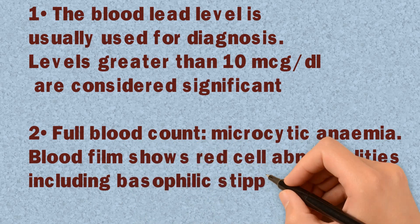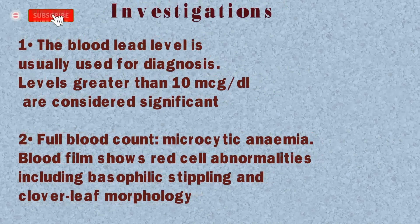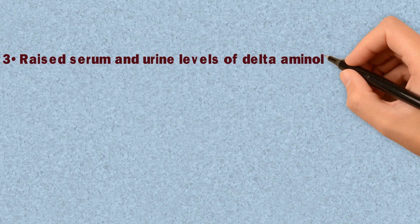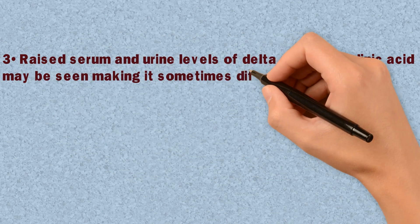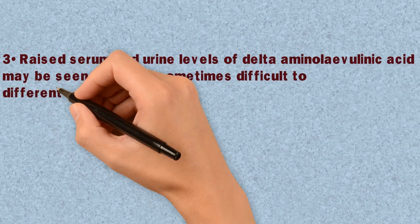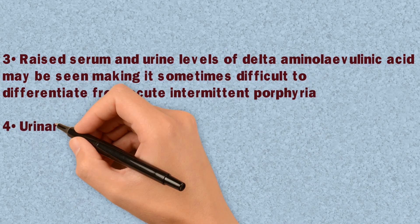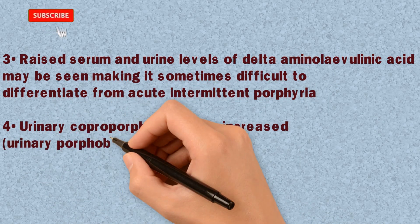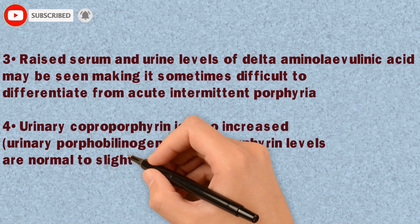Blood film findings include basophilic stippling and clover leaf morphology. Increased serum and urine levels of delta-aminolevulinic acid may be seen, making it sometimes difficult to differentiate from acute intermittent porphyria. Urinary coproporphyrin is also increased, while urinary porphobilinogen and urinary porphyrin levels are normal to slightly increased.